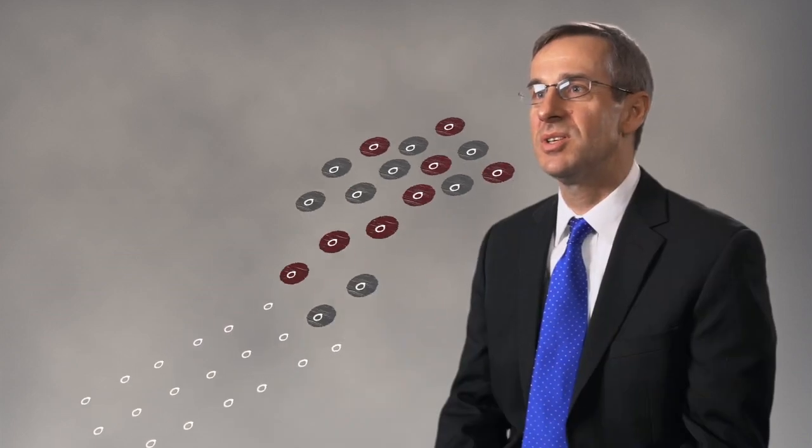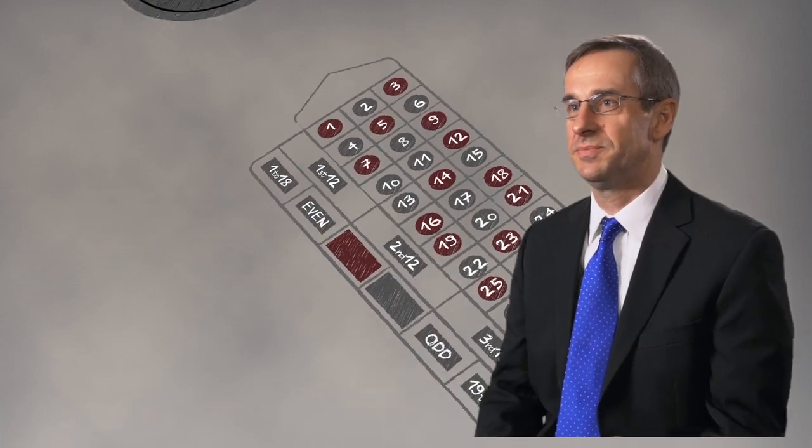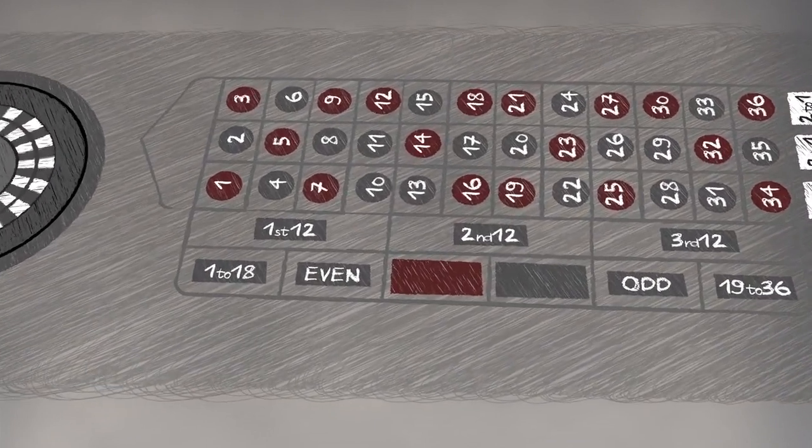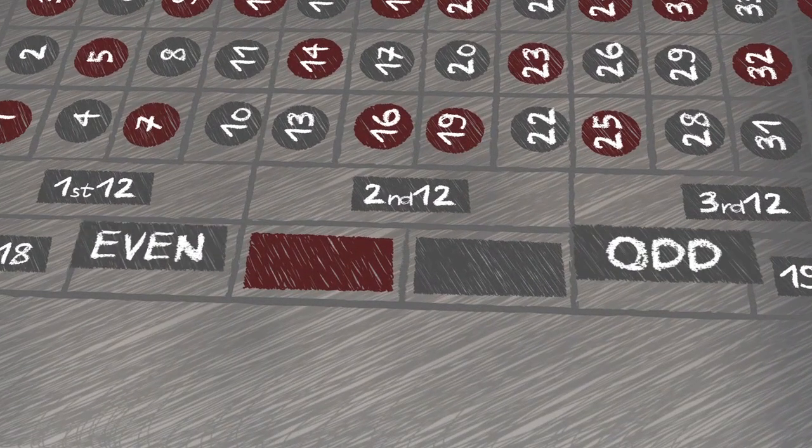To illustrate this, we'll consider a game of chance, like roulette. You can bet many ways in roulette. We'll focus on one of the simplest bets, on odds or evens.